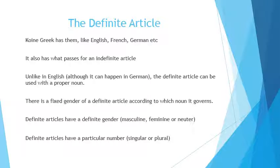The definite article: Koine Greek has them, like English, like French, like German, like Italian — but not like Japanese. Japanese does not have one, Chinese does not have one. Just because your language does or does not have a definite article does not make it a deal-breaker to understand. The good news for us, if you're listening in English, is that we already understand what's going on and something familiar to us in Koine Greek which we wouldn't have in Latin.